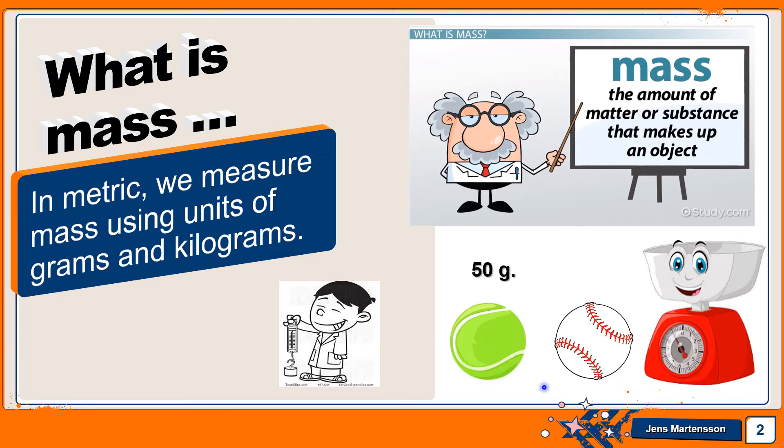So if we look at a baseball, or excuse me, a tennis ball, a tennis ball is about 50 grams, whereas a baseball is about 140 grams in weight.